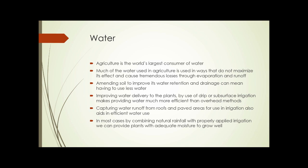One thing mentioned in this slide that deserves attention is proper plant selection. Sometimes plants — even the same type of plant — have vastly different requirements for water. There are varieties of corn that need much less water than other varieties of corn. So proper plant selection, proper crop selection — both species and varieties within species — is very important to make maximum use of water.